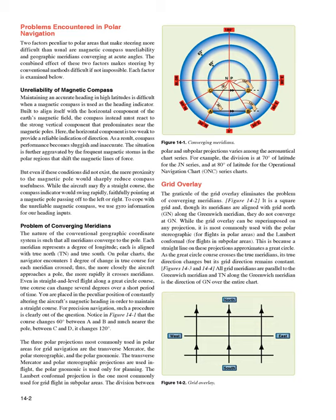Problems encountered in polar navigation. Two factors peculiar to polar areas that make steering more difficult than usual are magnetic compass unreliability and geographic meridians converging at acute angles. The combined effect of these two factors makes steering by conventional methods difficult, if not impossible. Each factor is examined below.